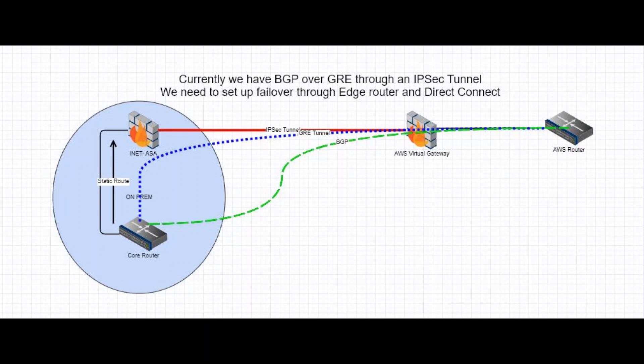Our whole objective is that, as far as production is concerned, all production traffic depends on the existence of this BGP session between the core and AWS routers. So in our entire concept, we need to ensure we have a backup path that goes over the Direct Connect. Let's see how we are planning to do that.